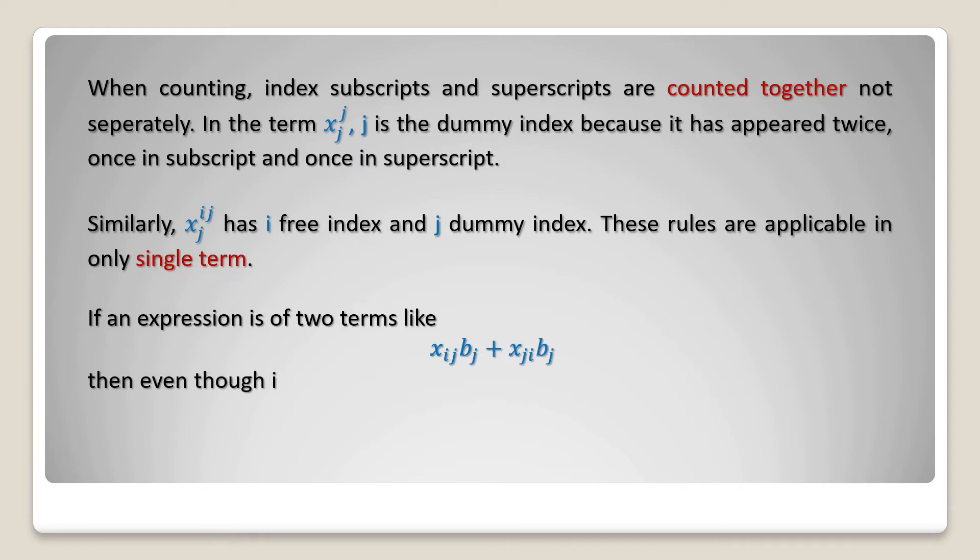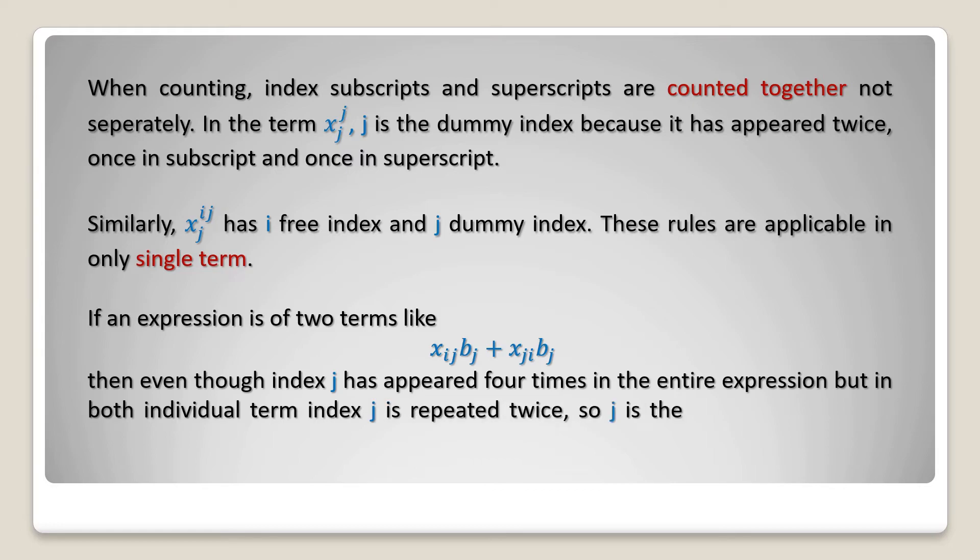If an expression is of two terms like xij bj plus xij bj, then even though index j has appeared four times in the entire expression, in both individual terms index j is repeated twice. So j is the dummy index and i is the free index.